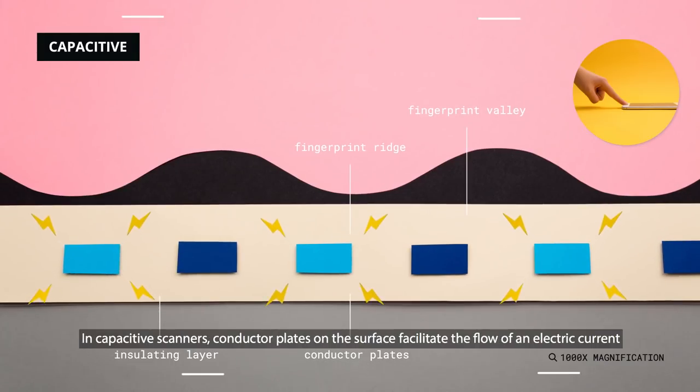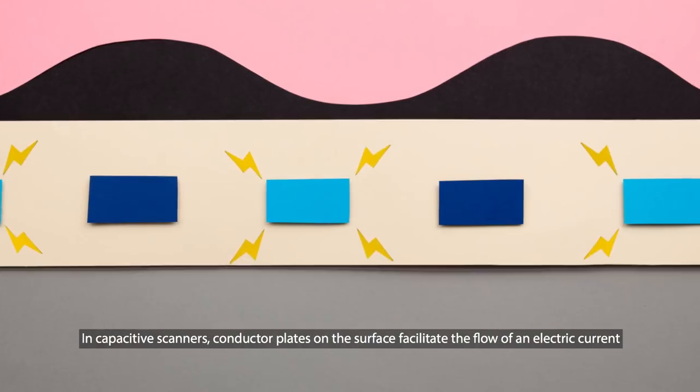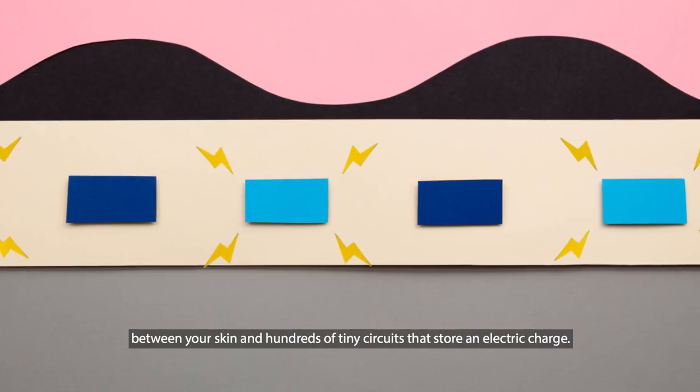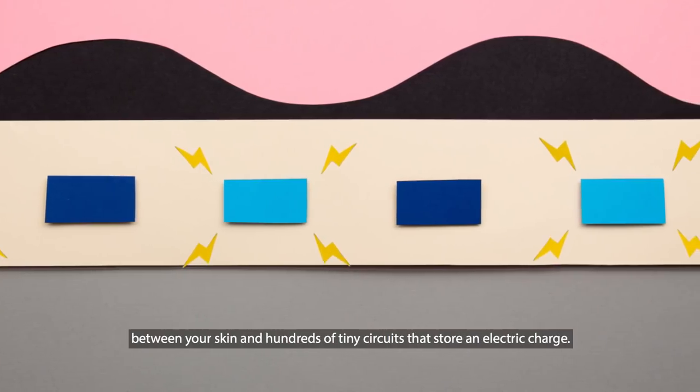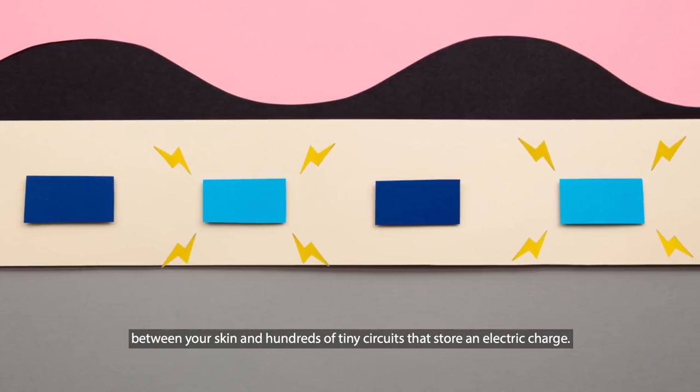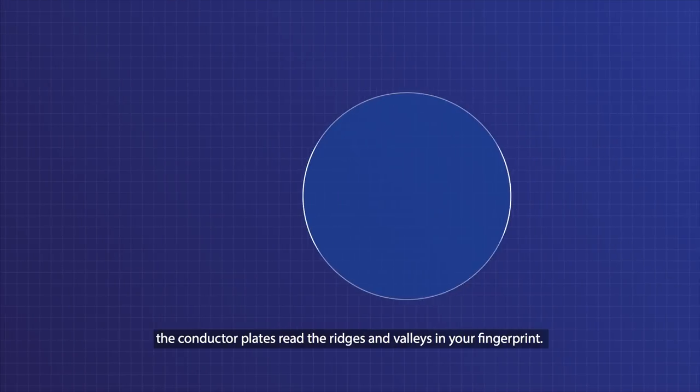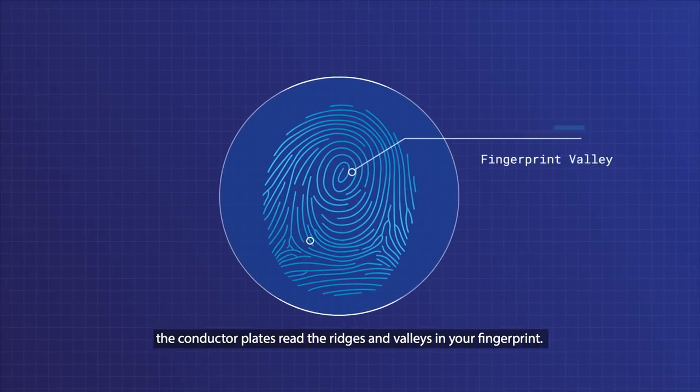In capacitive scanners, conductor plates on the surface facilitate the flow of an electric current between your skin and hundreds of tiny circuits that store an electric charge. When it touches the scanner, the conductor plates read the ridges and valleys in your fingerprint.